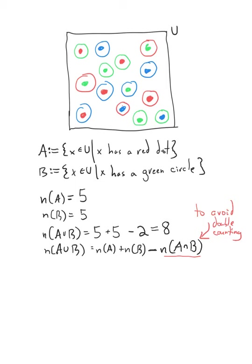So here is a formula for the number of elements in a union. To avoid double counting, just subtract off the ones that satisfy both A and B — that are in sets A and B. So that's really cool.